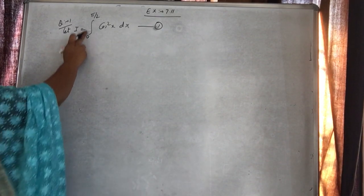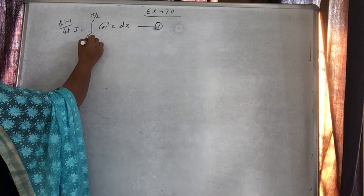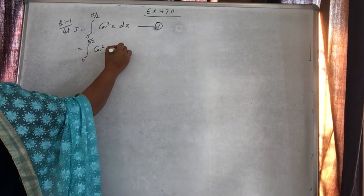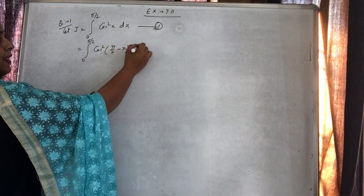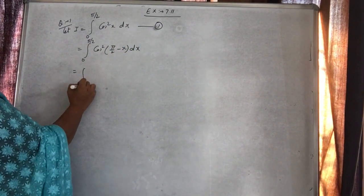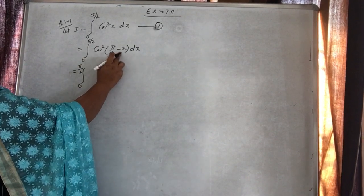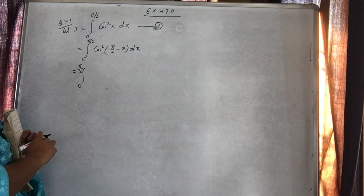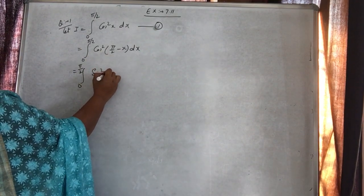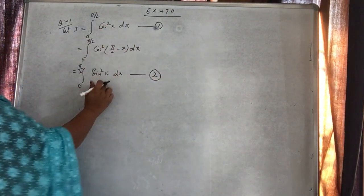Lower limit 0 hai, toh 0 to a ki property lagegi jismein hum x ko a minus x se replace karte hain — upper limit minus x. Toh 0 to π/2, cos square (90 minus x). Ab 90 minus first quadrant mein cos ko kya karega? Sin. Toh yeh ho jayega sin square x dx. Function change ho gaya.